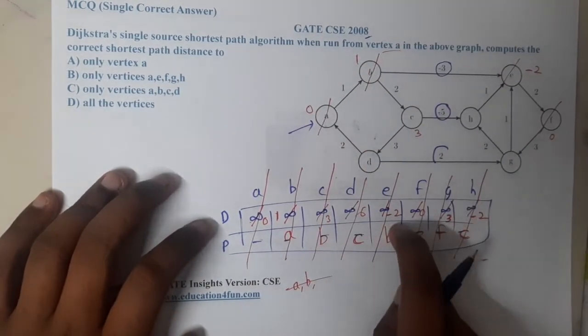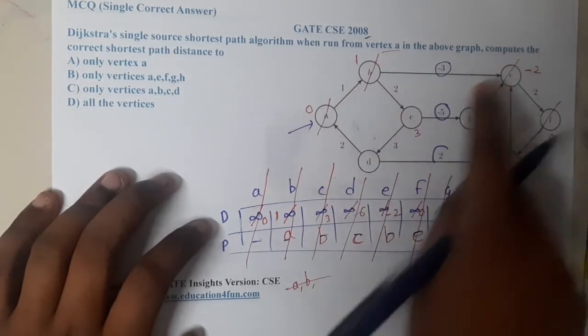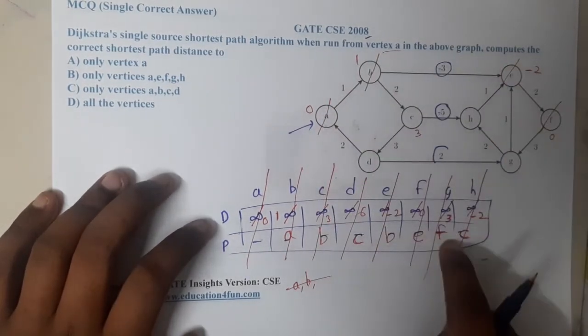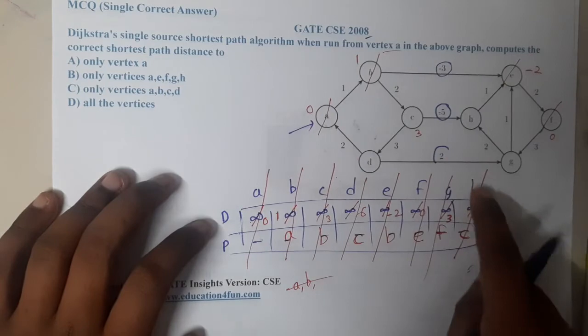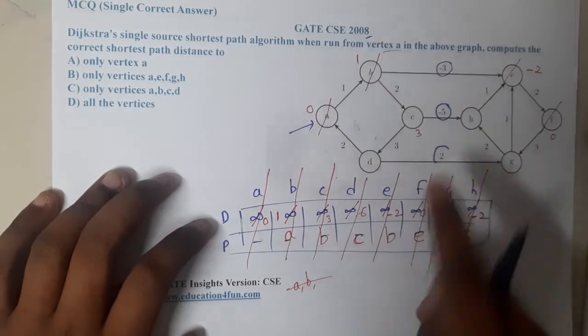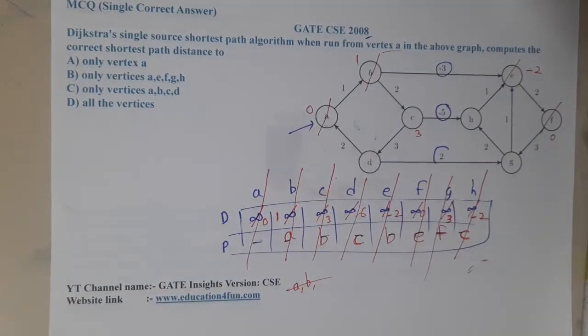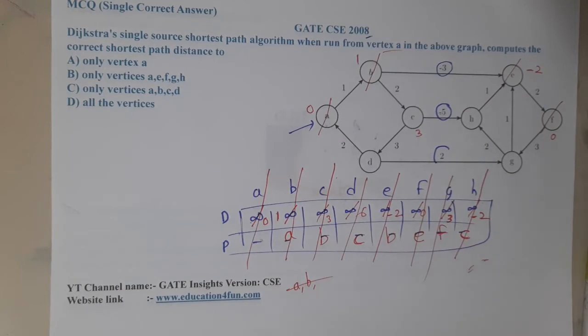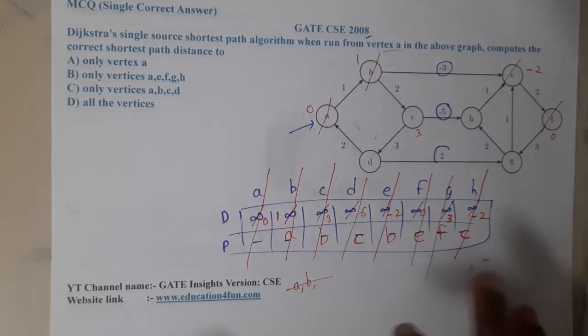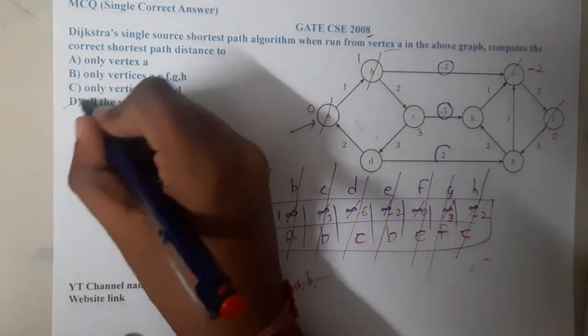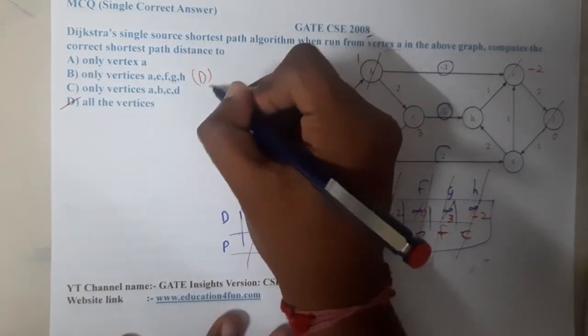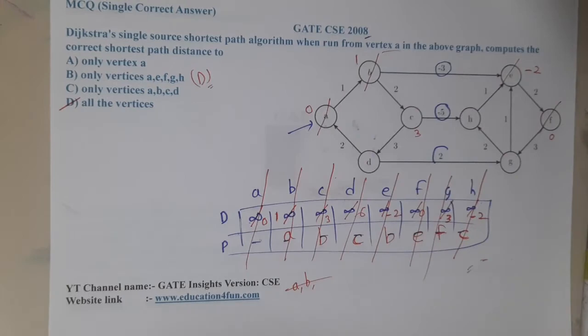Similarly, a to e this is the path, a to f this is the path, a to g so this whole is the path, a to h so this is the path. So in this way we have traveled the whole parts. There is no issue and we never faced an issue like we visited it with more cost. So we never faced those kind of issues, so hence you can clearly say that d is the correct answer. We have visited each and every vertex with its minimum cost.